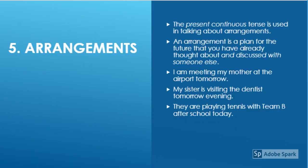How do you talk about arranged activities or arrangements? An arrangement is a plan for the future that you have already thought about and discussed with someone else. You use present continuous tense to talk about arrangements. Examples: I am meeting my mother at the airport tomorrow. My sister is visiting the dentist tomorrow evening. They are playing tennis with team B after school today. All these are arranged activities in the future, so you use present continuous tense.